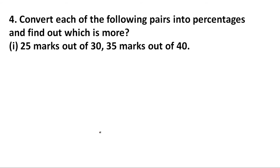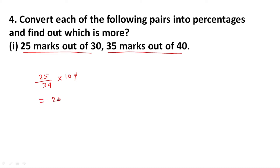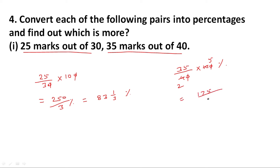Question number 4: convert each of the following pairs into percentages and find out which is more. First, 25 marks out of 30 — in percentage terms: 25 upon 30 multiplied by 100, equals 250 upon 3 percent, which is 83 and one-third percent. Second, 35 marks out of 40 — 35 upon 40 multiplied by 100 equals 175 upon 2, which is 87 and a half percent. So 87 and a half percent is more, meaning 35 marks out of 40 is more.